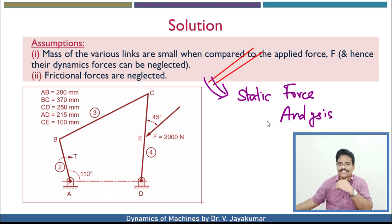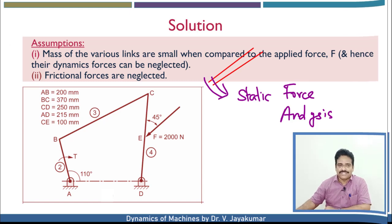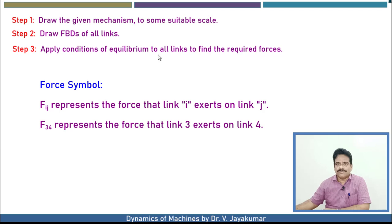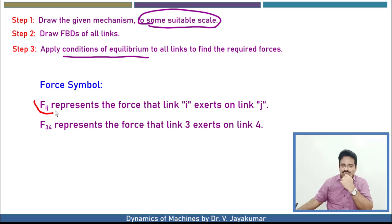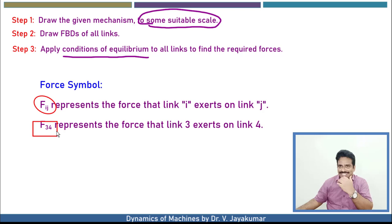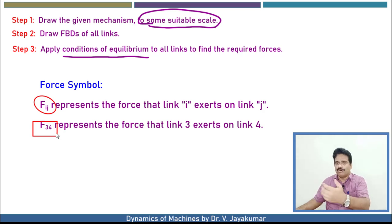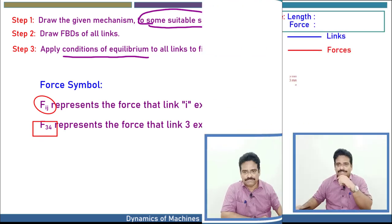This understanding is very essential. Now let us move on to the solution. These are the three steps which will be employed to solve this problem. Before proceeding, I am going to introduce a force symbol notation. F suffix IJ means the force that link I exerts on link J. For example, F34 means the force exerted by link 3 on link 4. This is the notation we are going to use.